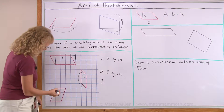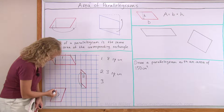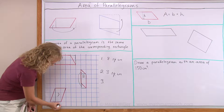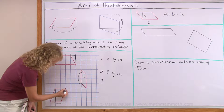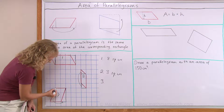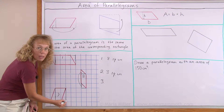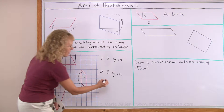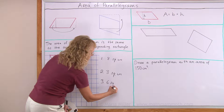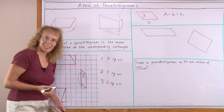And lastly over here, again the same thing happens. I'm going to cut off this triangle and move it over here. And I have a rectangle three units high, two units this way. Total area is six square units — that's pretty easy, isn't it?